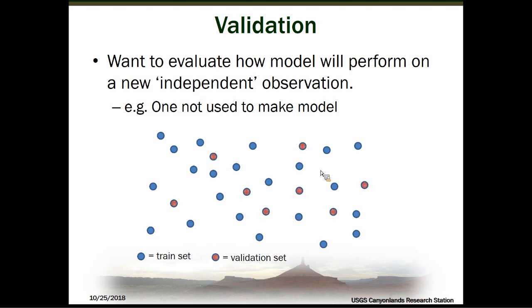One thing we have to think about with predictive modeling approaches is what we mean by validation and how we assess accuracy and predictive ability. We really want to know how these models will perform on a new independent observation. Imagine all your data collection locations: you'd want to train on one set — the blue locations — and evaluate accuracy on a separate validation set. This is analogous to working in an area you know well versus going to a new site where there's always a little mystery about what you'll actually find. That's kind of analogous to thinking about an independent validation set.